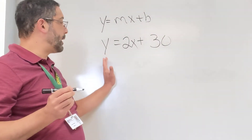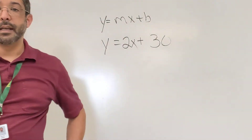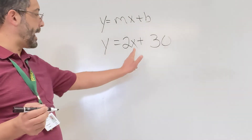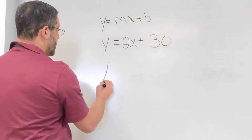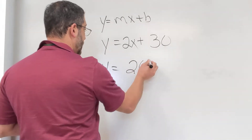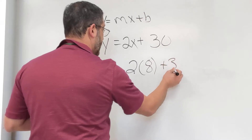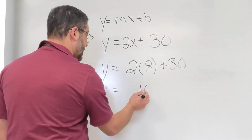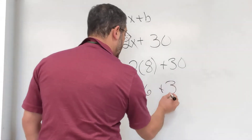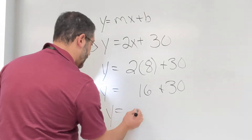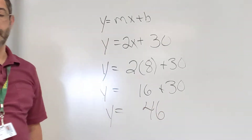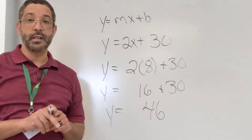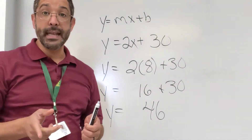Now the question asks how many bushels she has after eight hours, so I have two variables, Y and X. I'm going to substitute 8 in for X. So y = 2(8) + 30, which gives y = 16 + 30 = 46. So after eight hours, she will have 46 bushels of apples. That is the Activator.